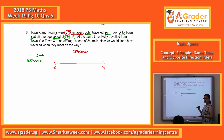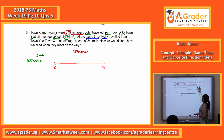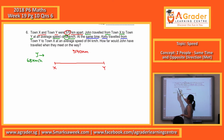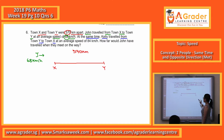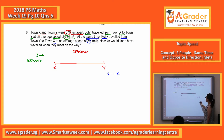And the next line they say, at the same time — even though time is not given, you can just proceed as it is. Kelly travelled from Y to X, so Kelly in this direction, at an average speed of 84 km per hour.